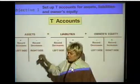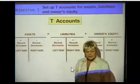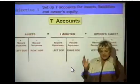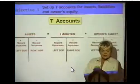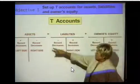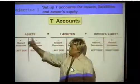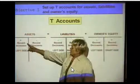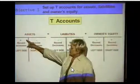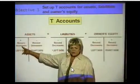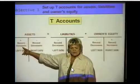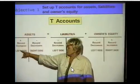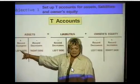So assets — we're no longer putting them on the spreadsheet. We're taking them so each one has their own little box, each one has a T. When you have an increase to an asset account, you're going to write it on the left side of the account to show that it was an increase to that account.